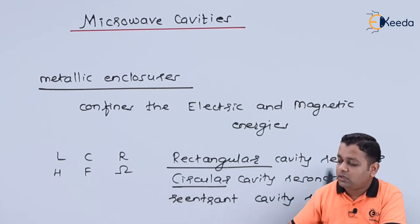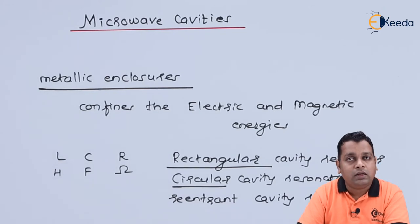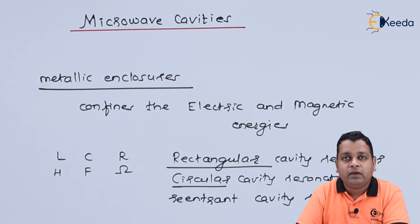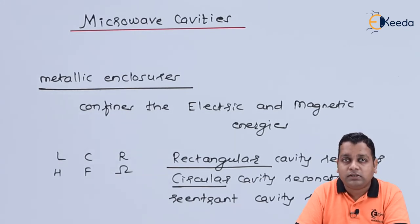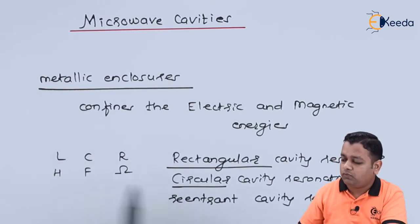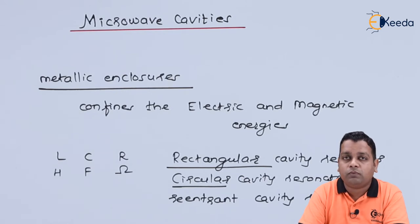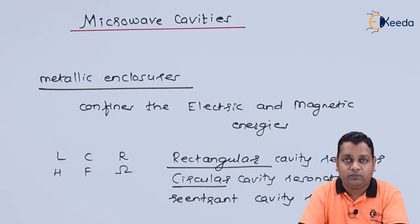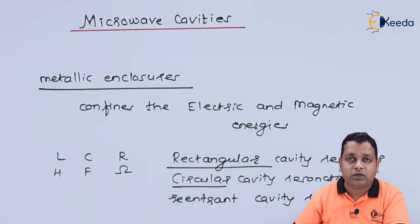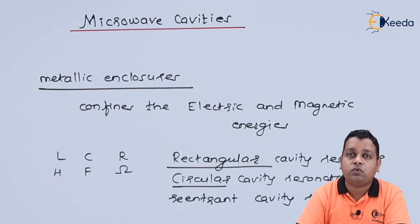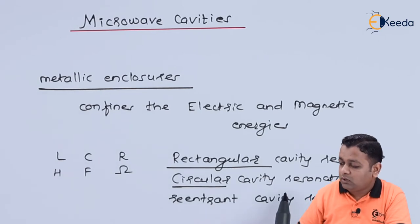The Rectangular Cavity Resonator and Circular Cavity Resonator are essentially modifications of waveguides in the form of resonators. The purpose of waveguides was transmission from one component to another, so that metallic tube had both ends open. When we close both ends of the rectangular waveguide or the circular waveguide, we get the Rectangular Cavity Resonator and the Circular Cavity Resonator respectively. We have also addressed the excitation modes used in transmission with rectangular and circular waveguides.